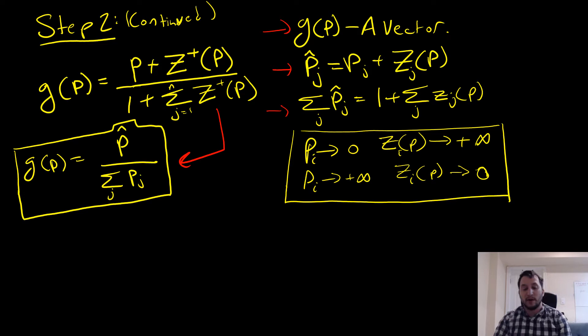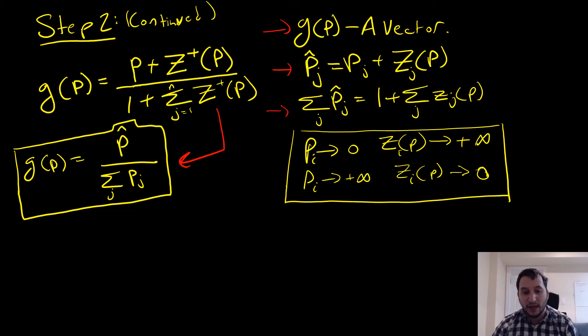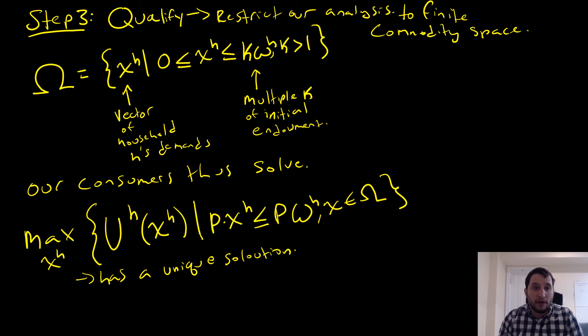Another fact we need to note is about the nature of our excess demand equations. These are pretty obvious relationships: if a price approaches zero, our excess demand will tend to infinity; and if our prices go to infinity, our excess demand will go to zero.